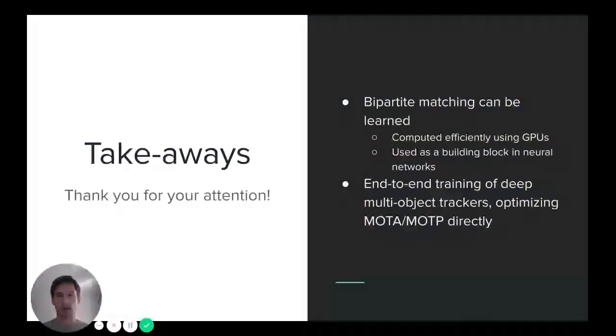So, takeaways are the following. Bipartite matching can be learned, and it can be computed efficiently using GPUs. Furthermore, it can be used as a building block in neural networks. But, what is most important here is that with this work, we actually pave the road for optimizing future deep multi-object trackers directly for the measures that are used to evaluate multi-object tracking performance. Thank you for your attention.